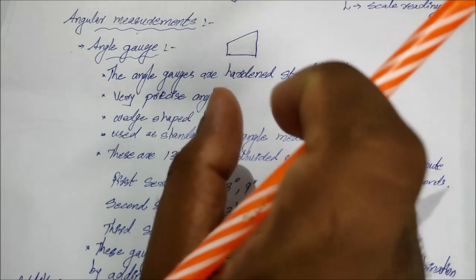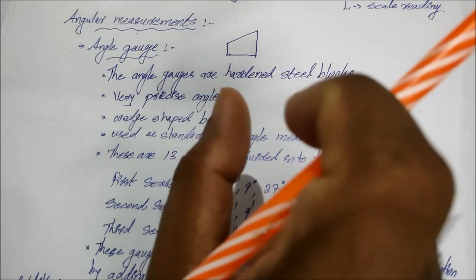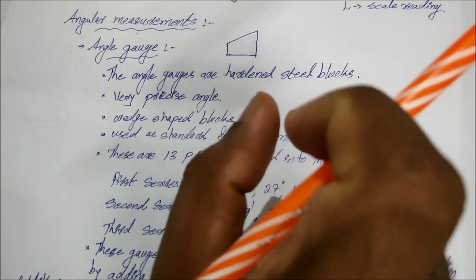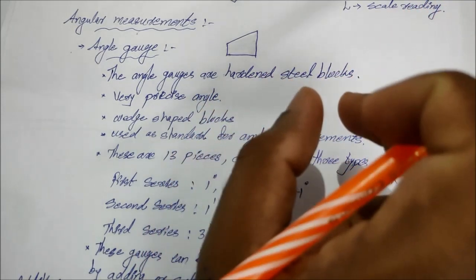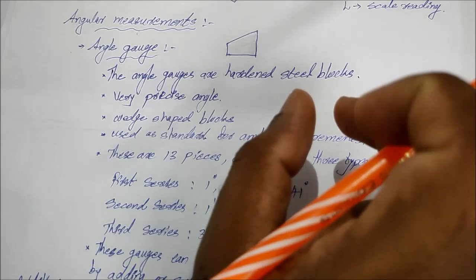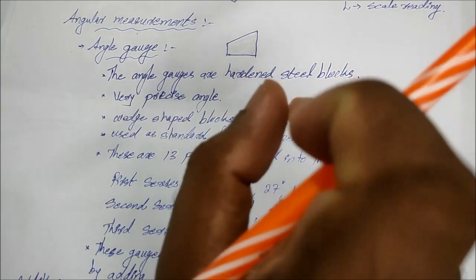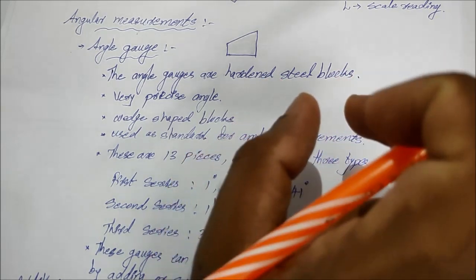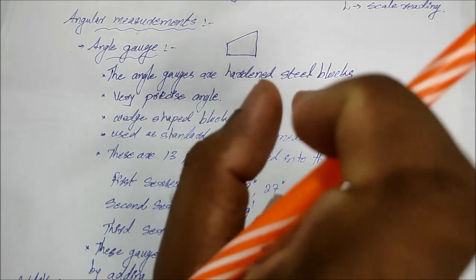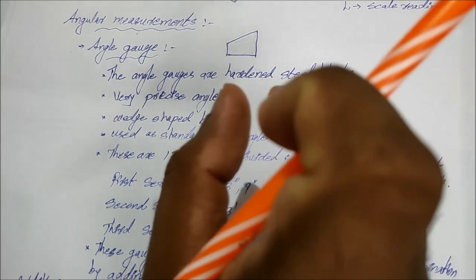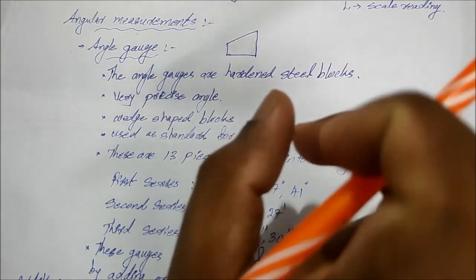This means the angle can be measured using subtraction. For example, for a 10-degree measurement, you can combine 15 degrees and subtract 5 degrees to get 10 degrees.